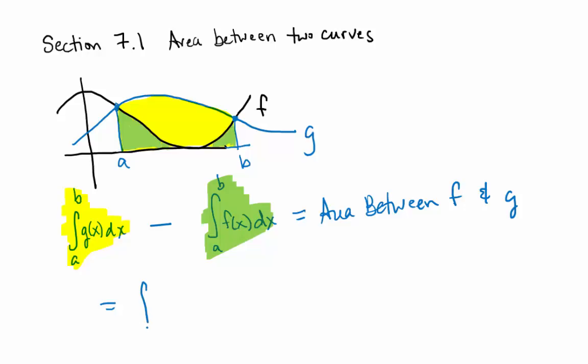So this one would be the integral from a to b of g of x minus f of x dx would be the area here between f and g.